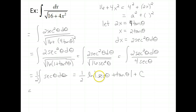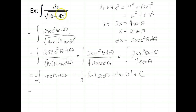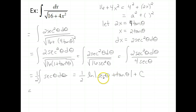It looks like we might be done, but we're not. The antiderivative is written in terms of theta, but the original problem is in terms of x — and the antiderivative should be in the same variable as the original problem. So we need to rewrite the expression currently in terms of theta back in terms of x. This is where we make use of a right triangle.